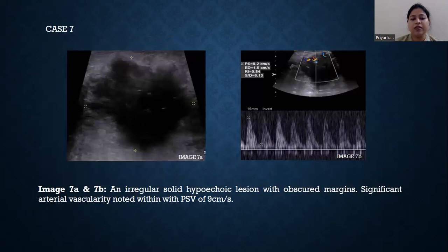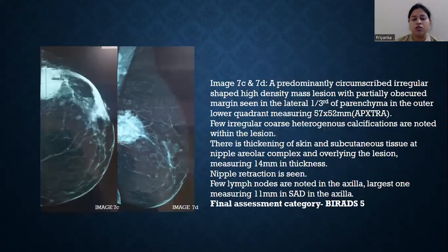Case number 7: an irregular-shaped, solid, hypoechoic lesion with obscured margin and significant arterial vascularity on limited color Doppler. On mammogram, it was seen as a predominantly circumscribed, irregular-shaped, high-density mass lesion with partially obscured margins, seen in the lateral one-third parenchyma of the outer lower quadrant.